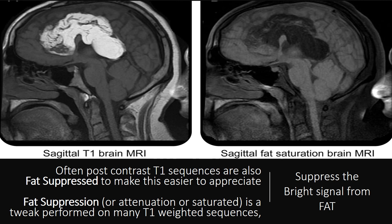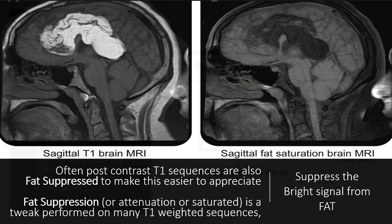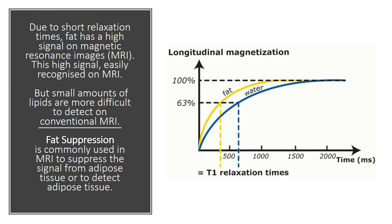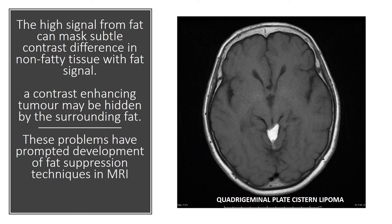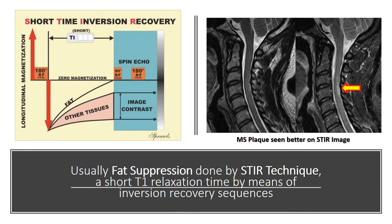Fat suppression is a technique performed on many T1 weighted sequences to suppress the bright signal from fat. Due to short relaxation times, fat has a high signal on MRI. While easily recognized, small amounts of lipids are more difficult to detect on conventional MRI. The high signal from fat can mask subtle contrast differences in non-fatty tissue, and a contrast-enhancing tumor may be hidden by surrounding fat. Fat suppression is commonly done using the STIR technique — a short T1 relaxation time by means of inversion recovery sequences.